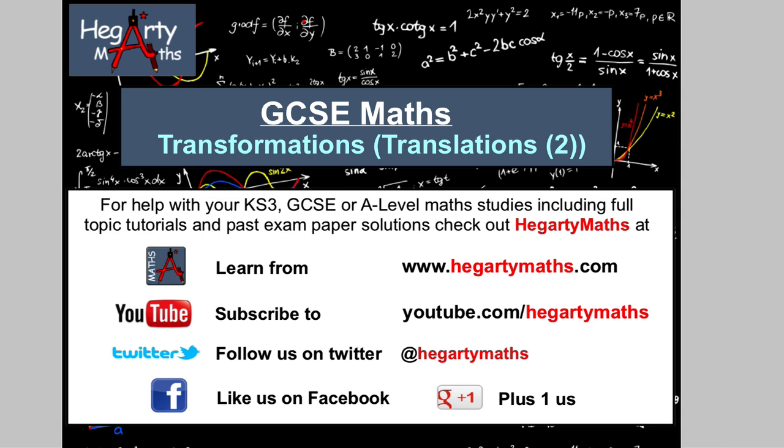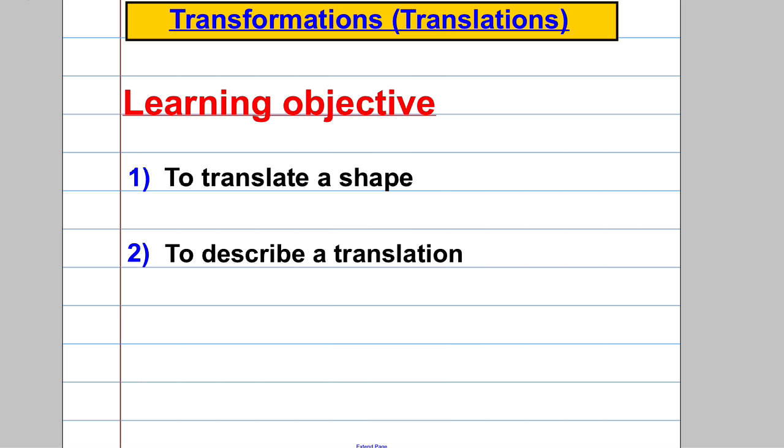Welcome to another video from Hegarty Maths. It's Mr. Hegarty here, and in this video, the second on translations, I'm going to show you how to describe a translation. Remember, a translation is a movement of a shape, and we use a vector like 3 negative 4, which means 3 right and 4 down. All we need to do is state the word translation and describe the vector.